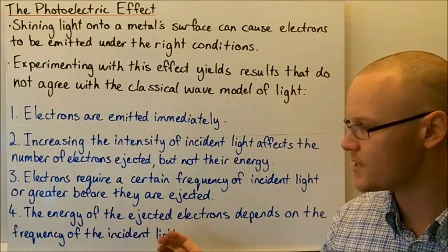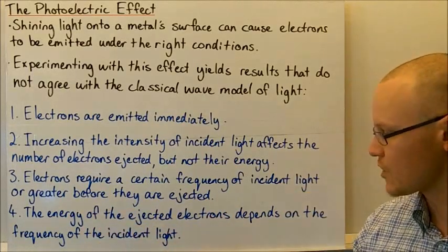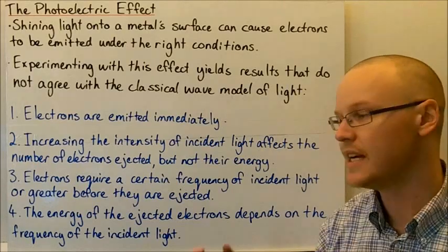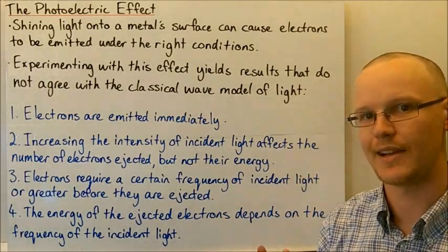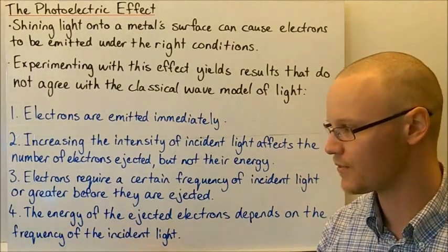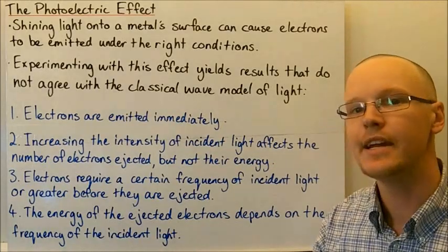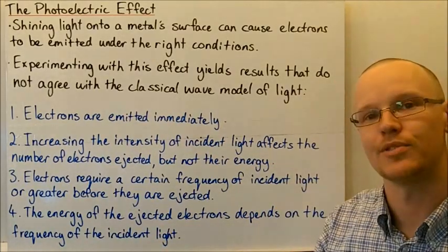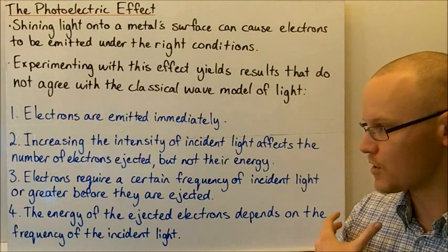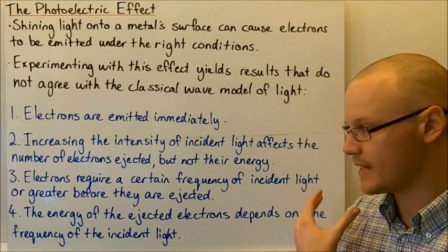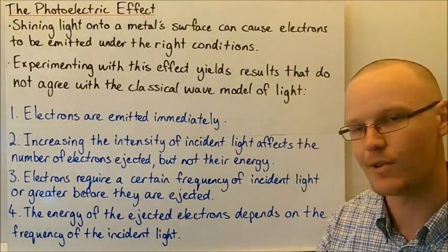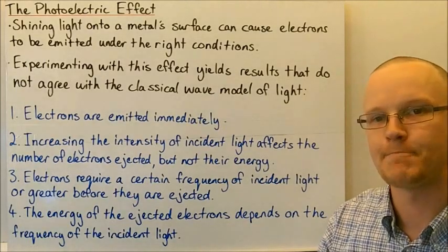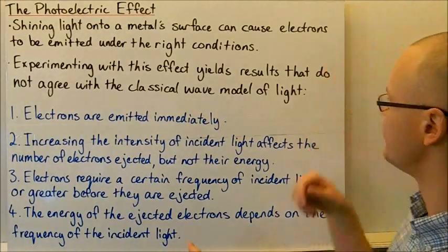The last point is that the energy of the electrons depended on the frequency of the incident light. The greater the frequency of the light coming in, the greater the energy of the ejected electrons. It was thought that changing the frequency of the light would not affect the energy of the ejected electrons.